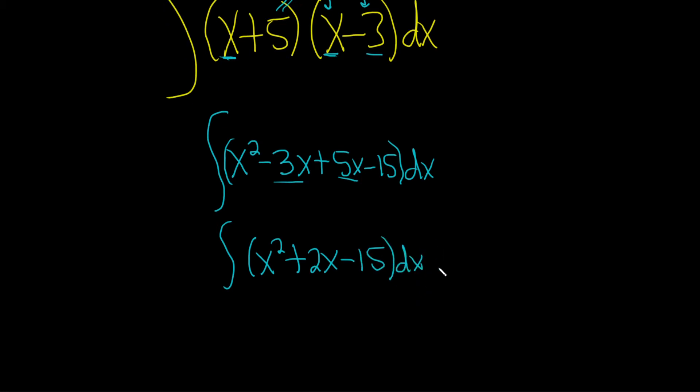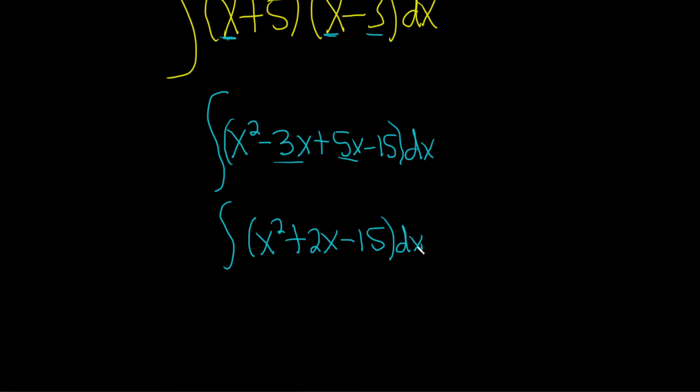Now we're in a good place. Now we can integrate each piece term by term using the power rule, which says we add 1 to the exponent and divide by the result. So 2+1 is 3, so we have x³, and then divide by 3.